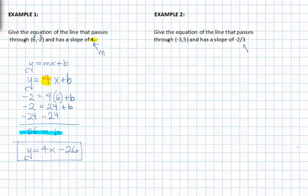We know our slope is 4, and we know our y-intercept is -26. So now we have a slope, we have a y-intercept, and it's in the form y equals mx plus b, so we now have the equation of the line.